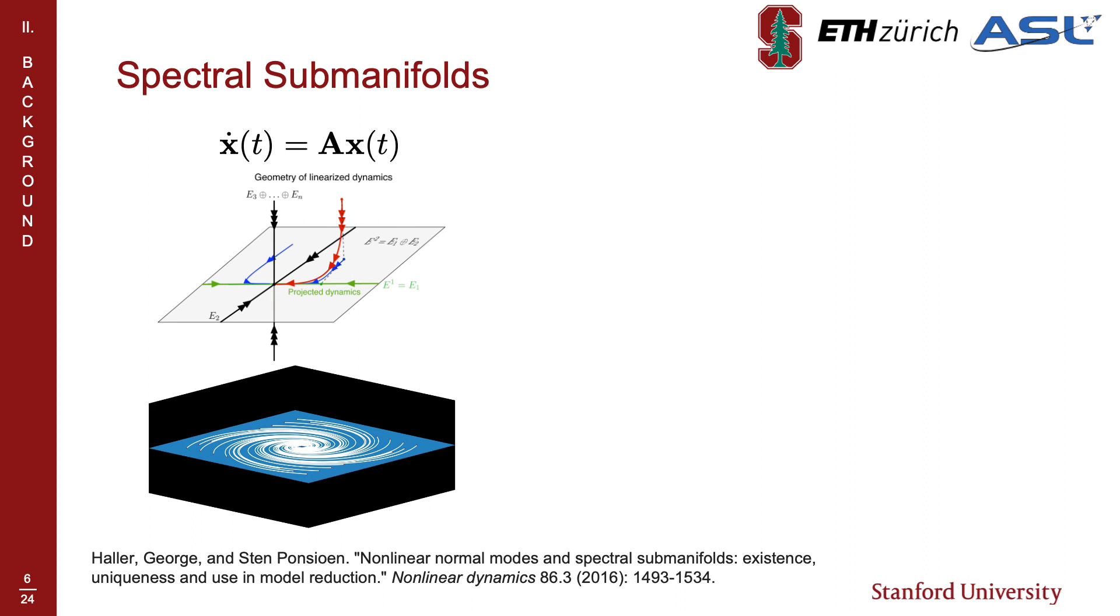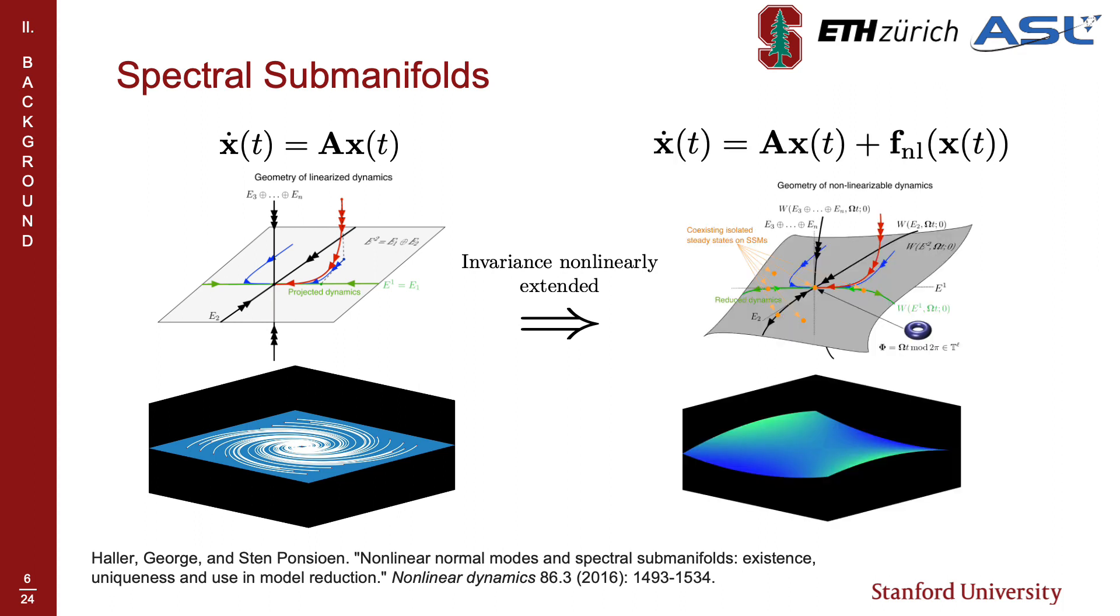Is there a dual notion of these attracting slow subspaces for nonlinear systems? Well, under non-resonance conditions on A, it turns out that there exists attracting slow manifolds tangent to a spectral subspace, which nonlinearly extends its invariance. The unique smoothness manifold attached to a spectral subspace is known as a spectral submanifold. Since the dynamics on low dimensional SSMs can capture highly nonlinear phenomenon, we specifically target these manifolds to extract reduced dynamics.